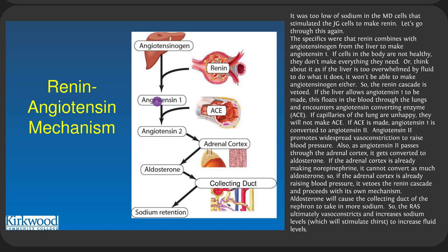If the liver allows angiotensin 1 to be made, it floats through the blood to the lungs and encounters angiotensin-converting enzyme (ACE) in the capillaries. If those capillaries are healthy, ACE converts angiotensin 1 to angiotensin 2. Angiotensin 2 promotes widespread vasoconstriction to raise blood pressure. As angiotensin 2 passes through the adrenal cortex, it gets converted to aldosterone. Aldosterone goes to the collecting duct and increases sodium absorption. Increased sodium makes you thirsty, which increases water absorption, raising blood and fluid volumes.